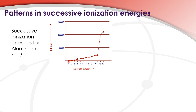We start off by removing electrons one, two and three. These three electrons are in the valence shell — aluminium has three electrons in its valence shell — so these electrons are relatively easy to remove. It doesn't take a lot of energy to remove these. The first reason is because they are far from the nucleus, so you have a weaker electrostatic attraction between the nucleus and these electrons. You also have electron shielding: between these electrons and the nucleus there are shielding electrons, which results in a weaker electrostatic attraction.